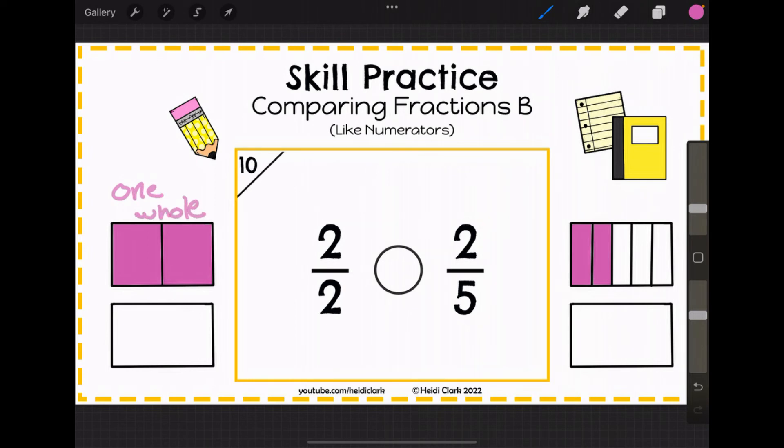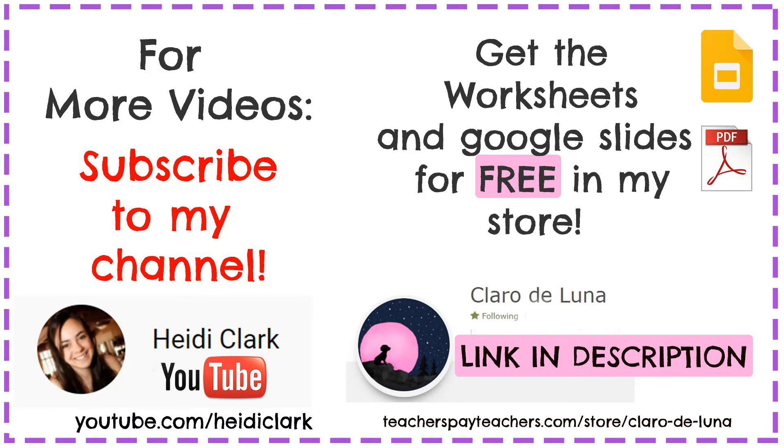Now, let's draw our greater than or less than symbol, and I always think of it as an alligator, like with teeth, and it's going to open towards the bigger fraction. So in this case, we're going to draw it this way, opening up towards 2 halves, and we would read this as 2 halves is greater than 2 fifths.